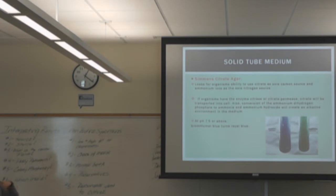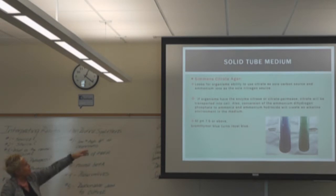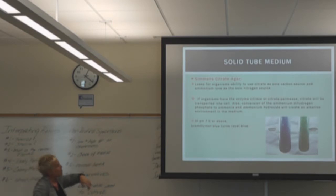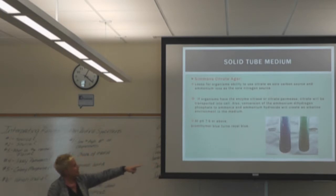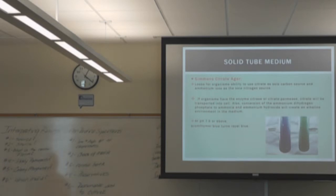Simmons citrate is another slant tube, good for enterics as well. The ability to use citrate as the sole carbon source is what's being tested. Positive citrate turns royal blue; negative stays green. I believe either E. coli or Klebsiella is differentiated with the citrate test — one is positive but I don't think it's E. coli.